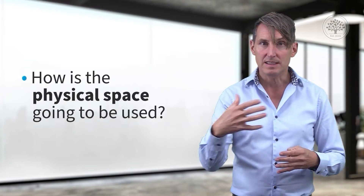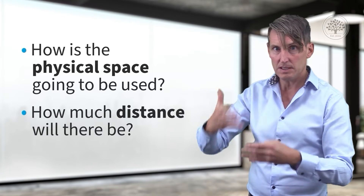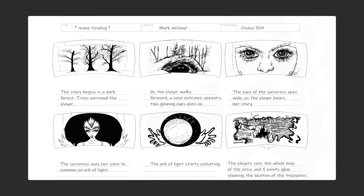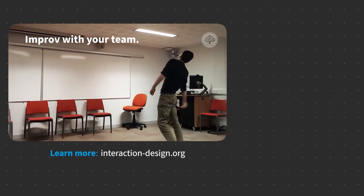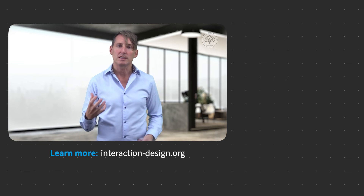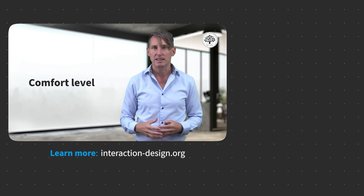The physical space, the distance to objects and menus, what that's going to be like — are they going to reach out? Is it going to be too weird? Are they going to be looking down with their head down, like I've seen in a lot of VR UIs? You can make a UI simulation — a little video recording of all your flow sequences, like a video storyboard. Walking and doing improv with your fellow designers, your team, your content people. As you demo, think about what all that requires, because you're really looking for that comfort level as you deliver your content. Navigation and things like that should really be secondary.